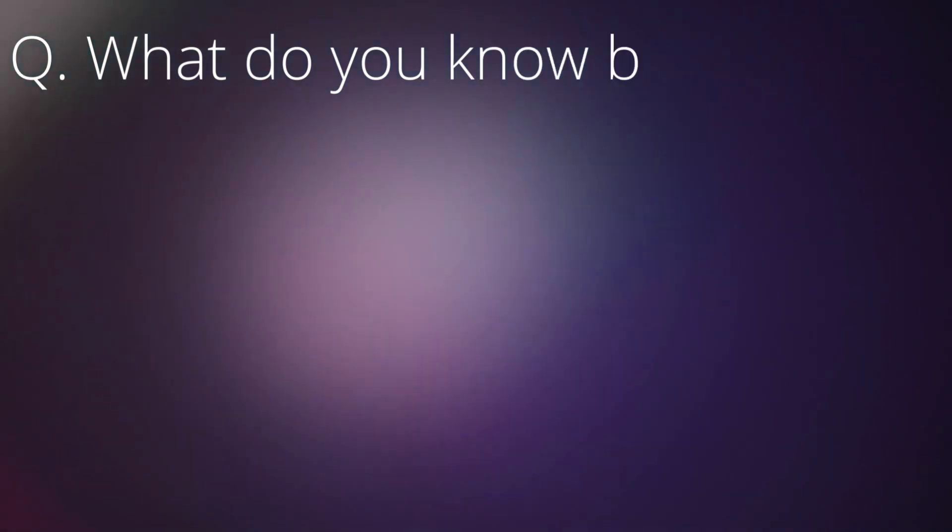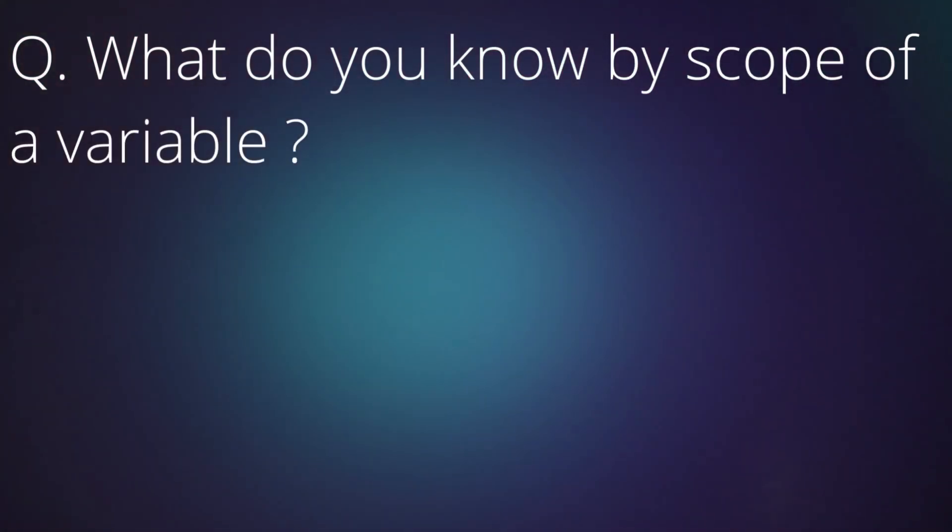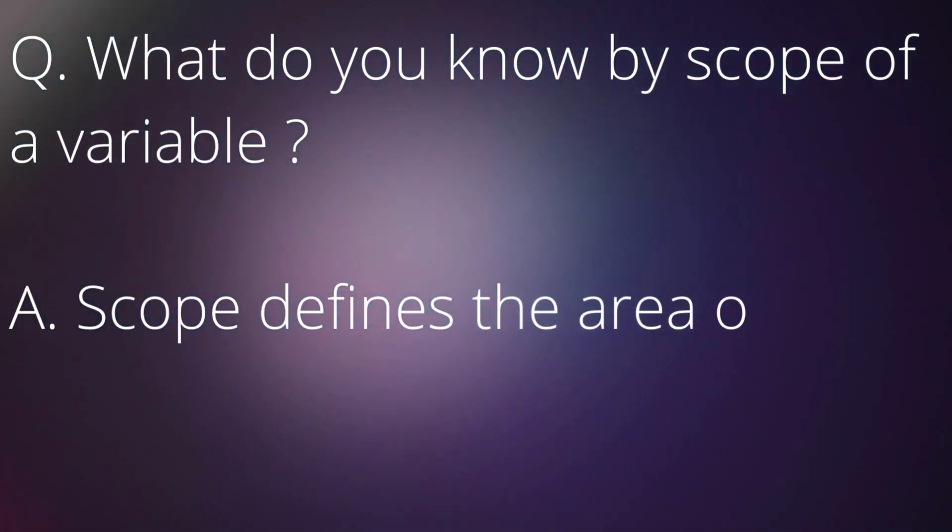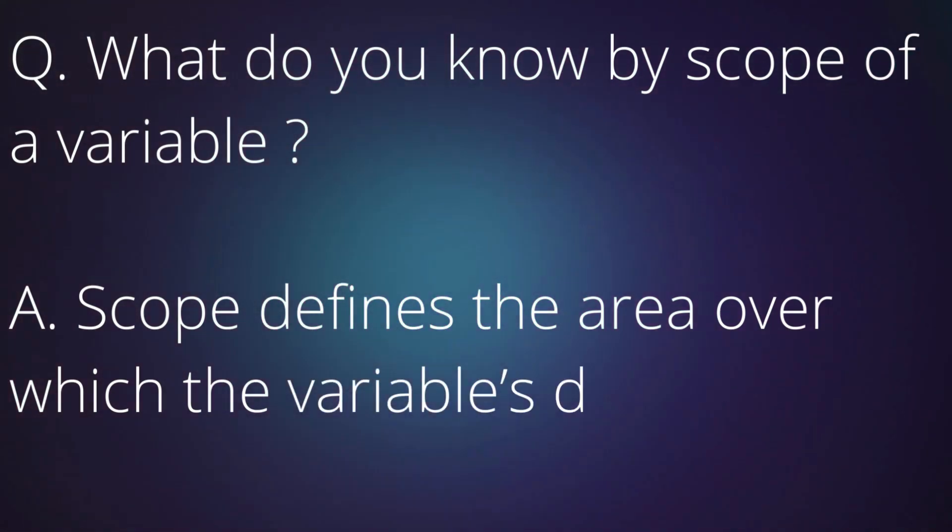Question: What do you know by scope of a variable? Answer: Scope defines the area over which the variable's declaration has an effect.